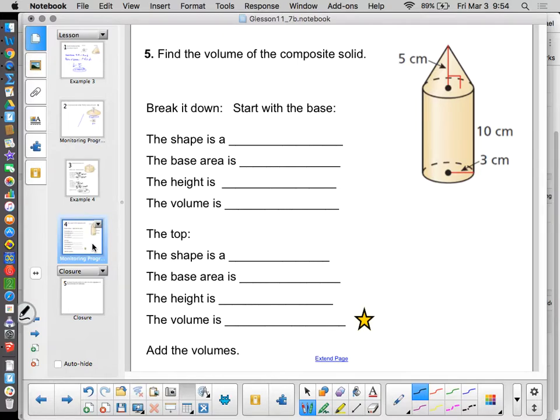Gosh, here's another very similar situation. The base, the shape is a cylinder. The base area is going to be, again, it's a circle, so pi r squared, or 9 pi centimeters squared. The height is 10 centimeters, that's given, and the volume is going to be 9 pi times 10 is 90 pi centimeters cubed, because it's just base area times height.